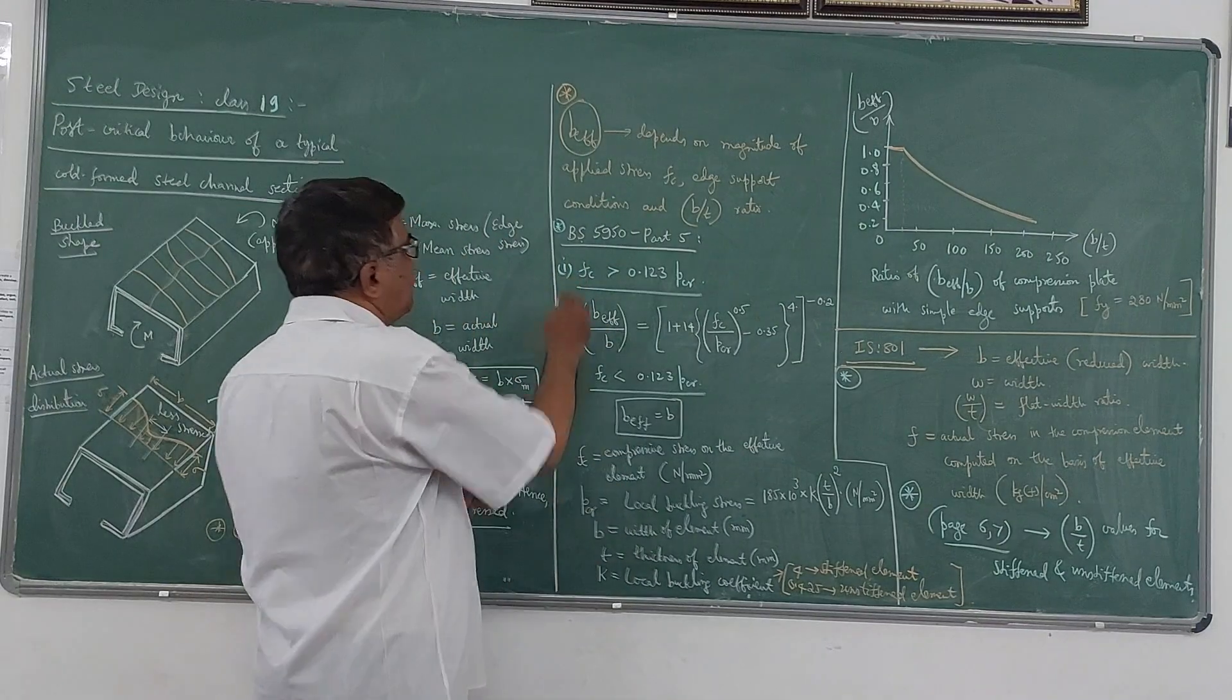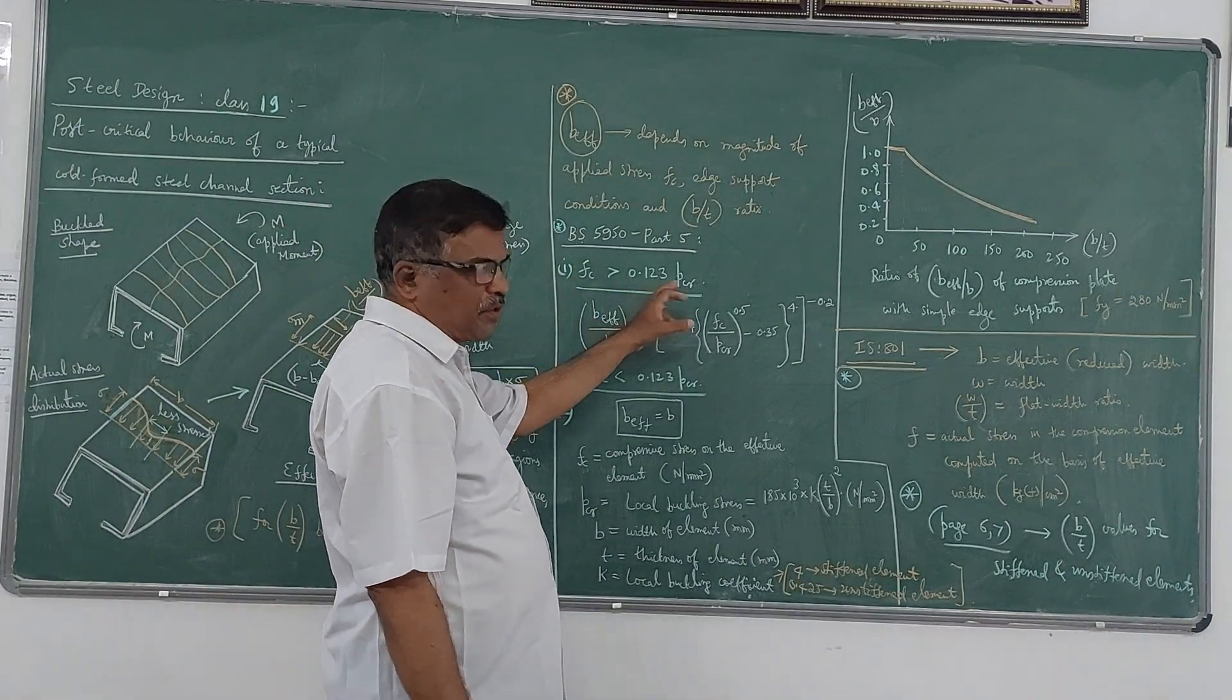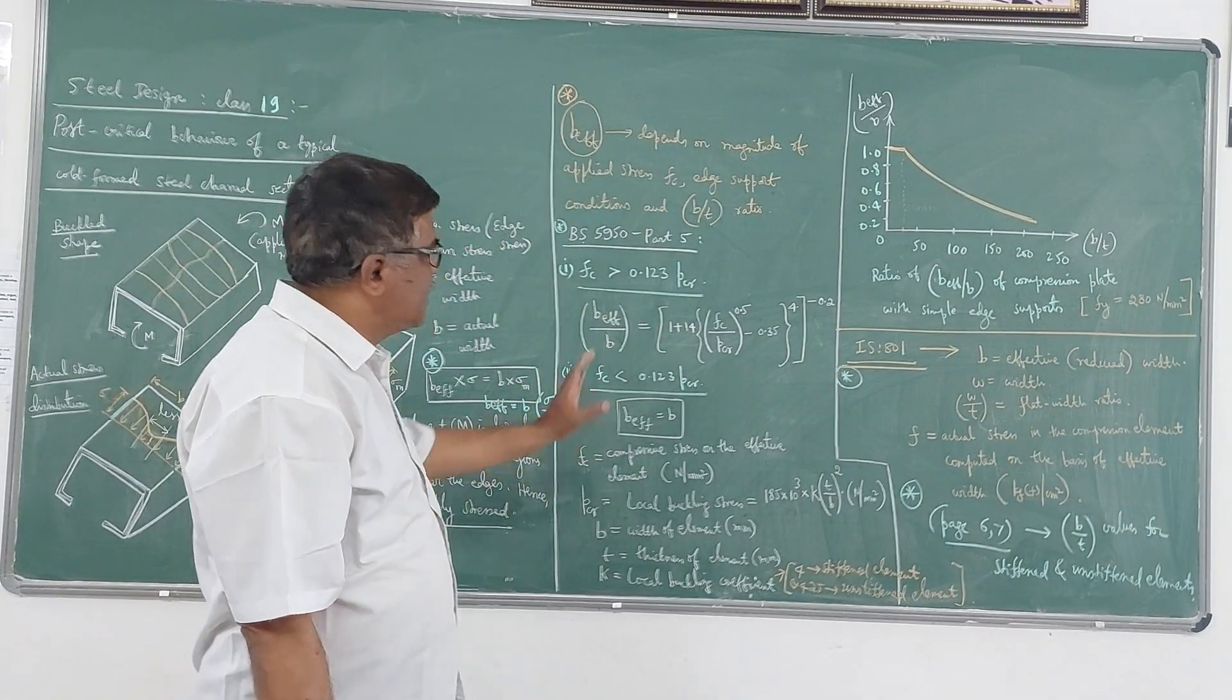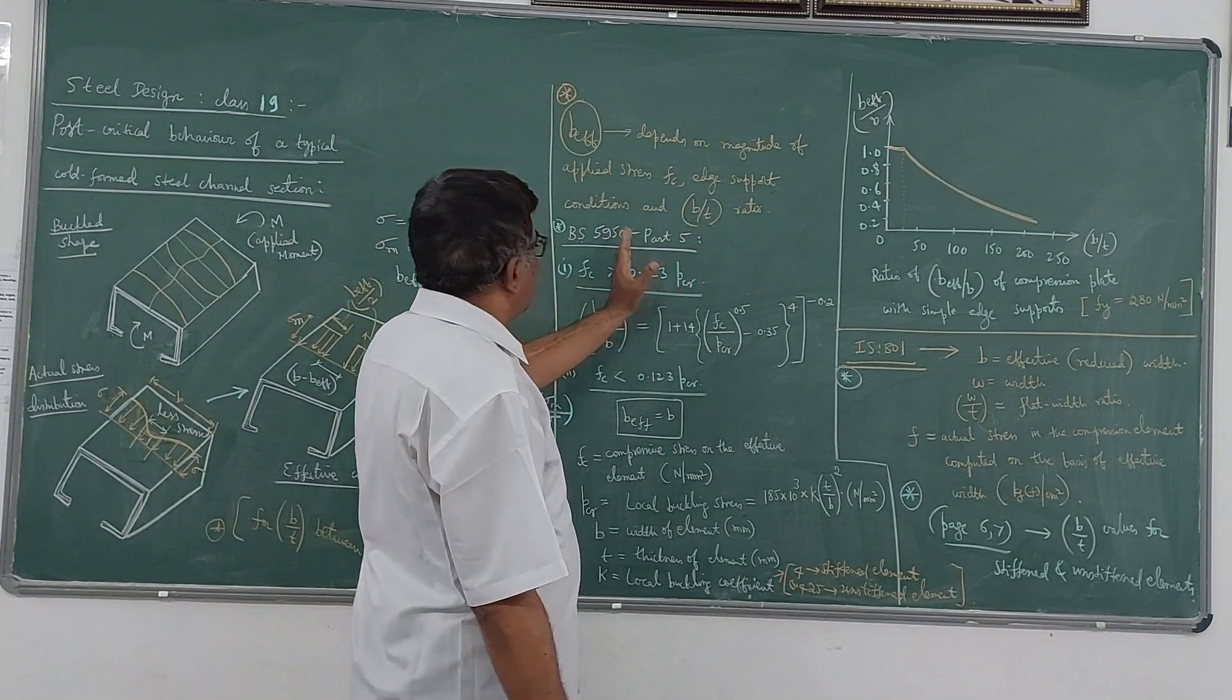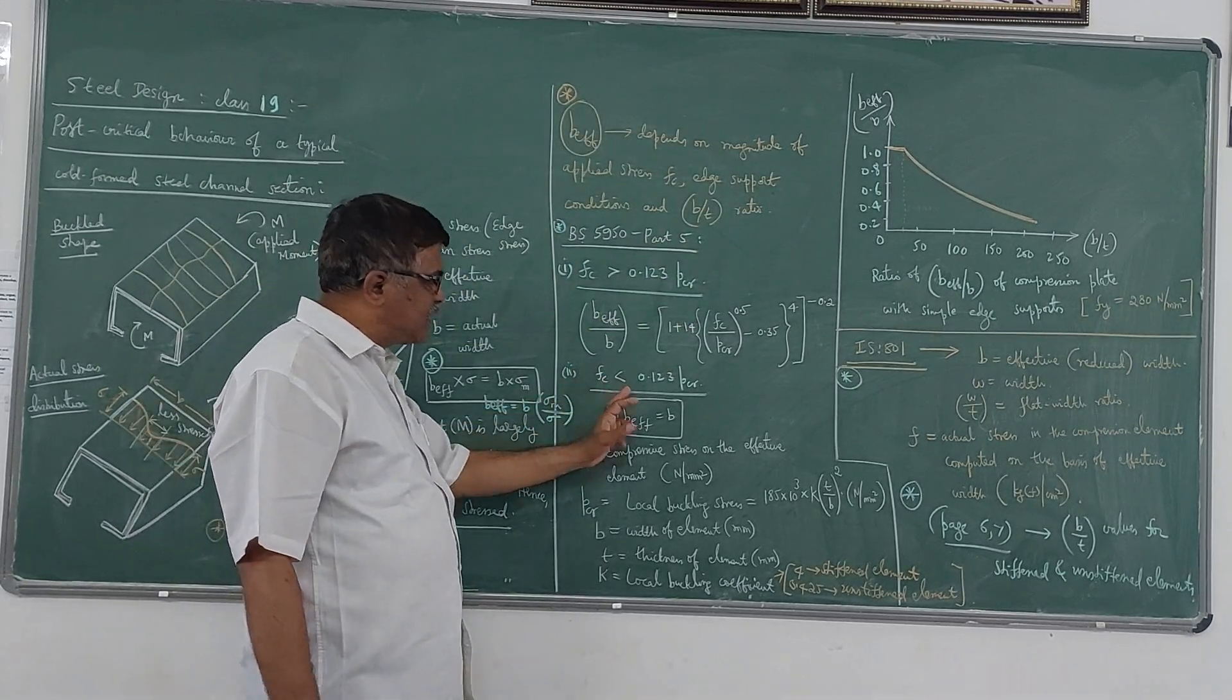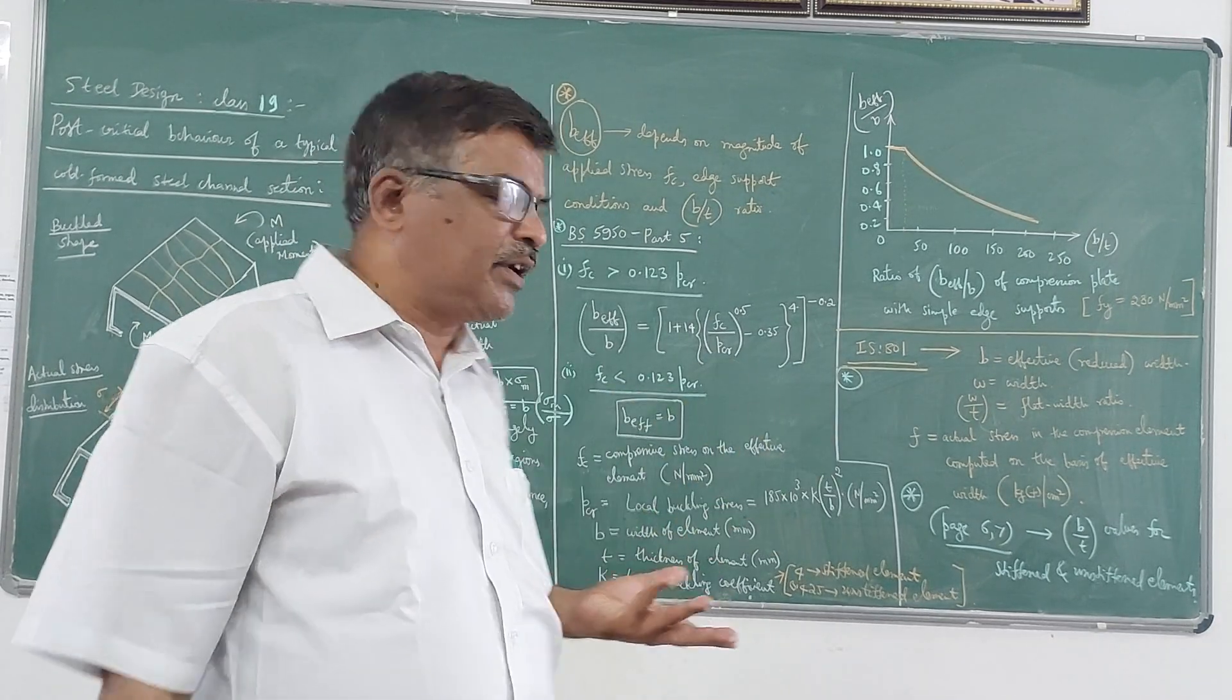So now when this value of Fc is greater than 0.123 times PCR, then the ratio of B_effective by B is generated using this formula. So this is the formula which is given in BS 5950 part 5. And when this value of Fc is less than 0.123 times PCR, then B_effective can be equated to B.